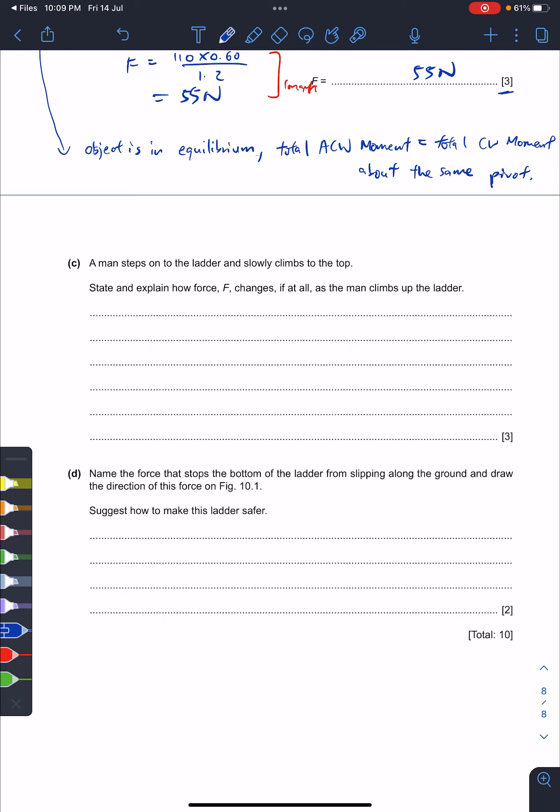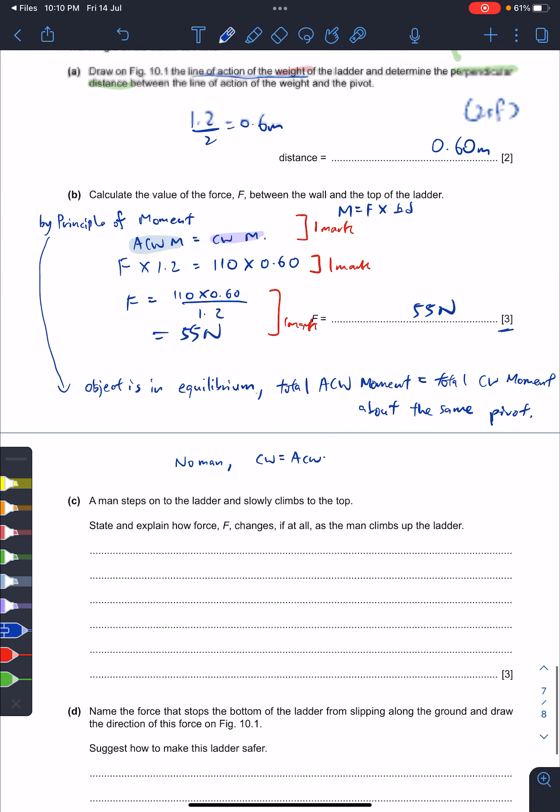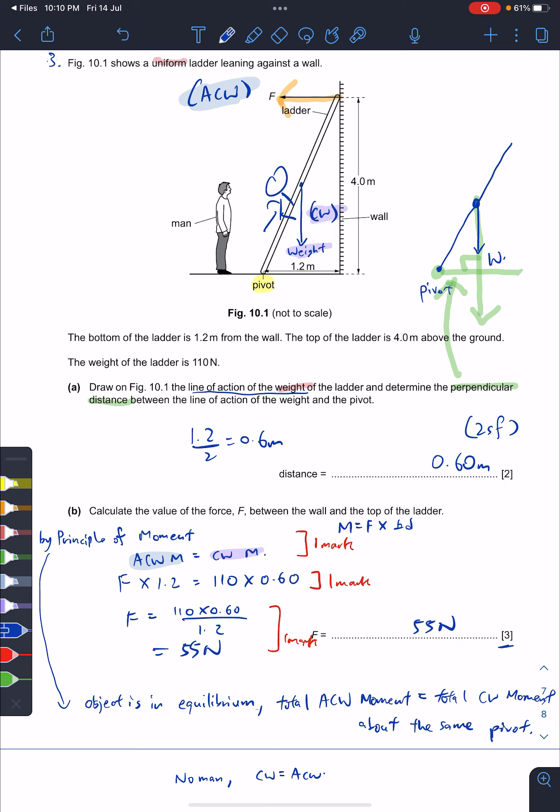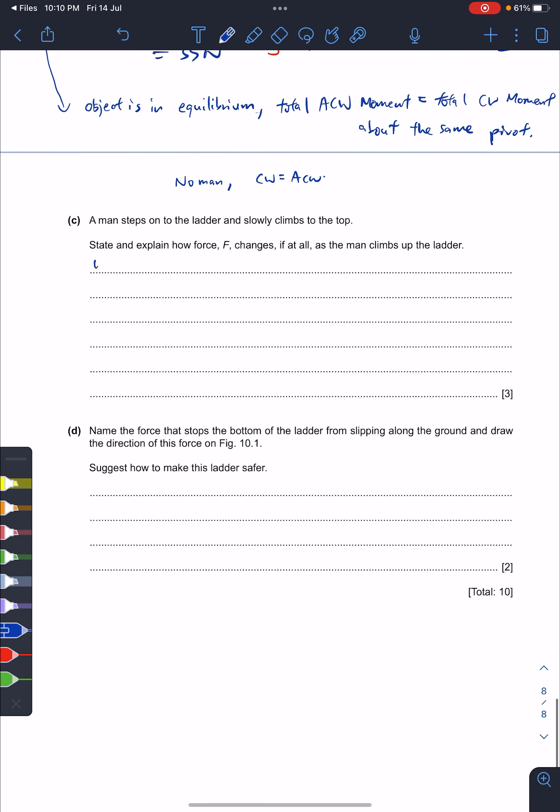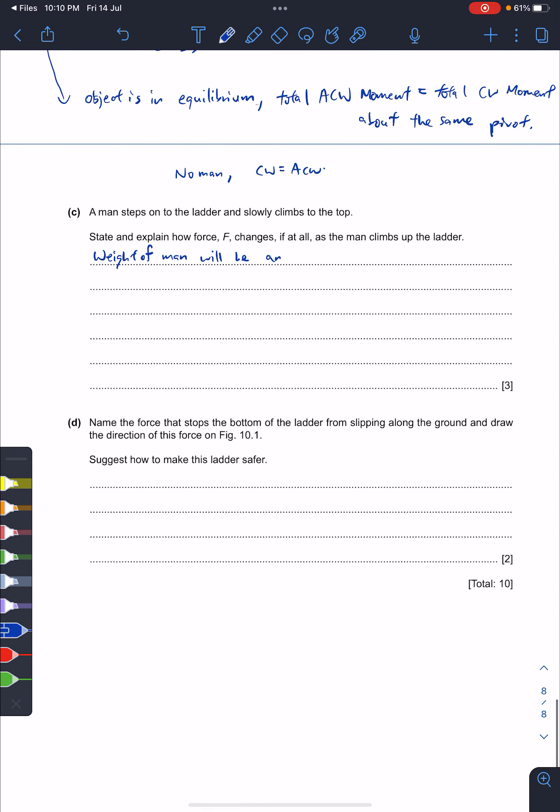Next one says that the man climbed onto the ladder, steps onto the ladder and slowly climbed to the top. So you see originally no man - clockwise equals anti-clockwise, perfectly fine. But what happened when there's a man? If you have the man, the man will have weight, so there's an extra force - the weight of the man.